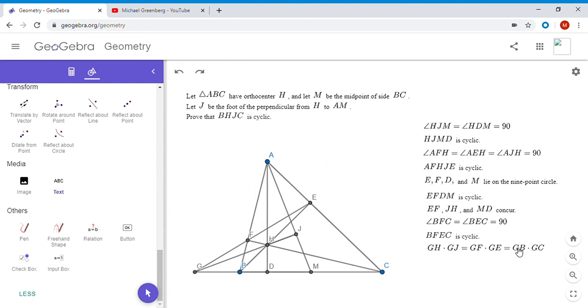So I'll just add that extra equality here. Then by the transitive property, we have GH times GJ equals GB times GC. But that's exactly what we wanted because that is power of a point. So by converse of power of a point, we know that BHJC has to be cyclic then, and that solves the problem.